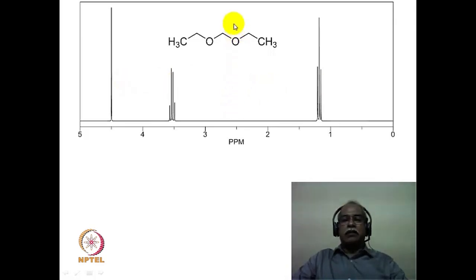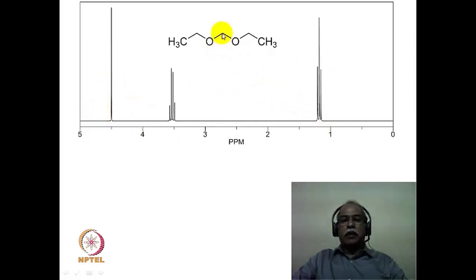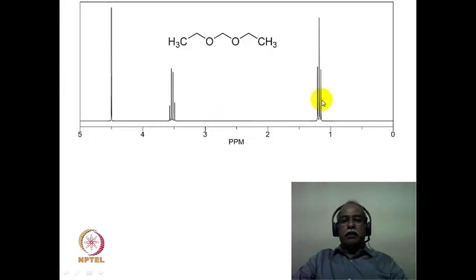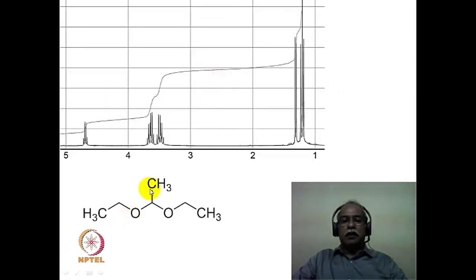Now suppose we introduce a substituent in the form of a methyl group at the CH2 position. What happens to the NMR spectrum? This simple spectrum turns into a fairly complex spectrum upon introducing a simple methyl group, because now the molecule loses its symmetry. We are now talking about this particular molecule. This spectrum is much more complicated compared to the earlier example's simple quartet, triplet, and singlet. This introduction of a methyl group at the methylene position has caused enormous changes in the NMR spectrum.